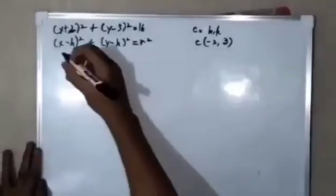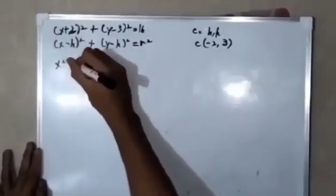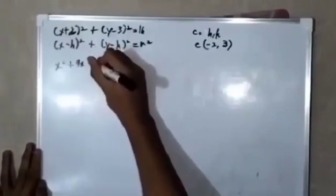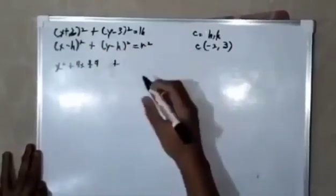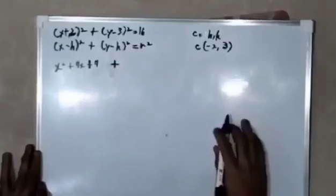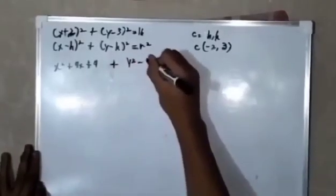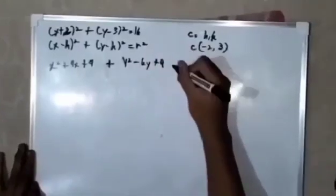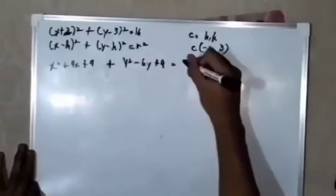Expanding: x plus 2 squared is x squared plus 4x plus 4, plus y minus 3 squared is y squared minus 6y plus 9, is equal to 16.